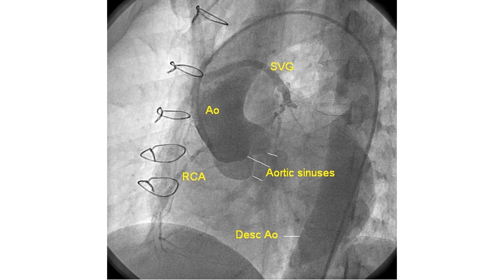Very often, cannulation of SVG by this technique is feasible. It is needless to say that direct injection into the SVG gives better visualization than an aortic root angiogram, at a lesser volume of angiographic contrast agent.